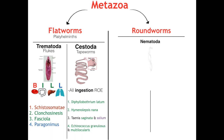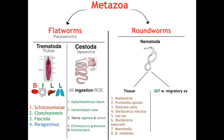And finally, for our roundworms, a.k.a. nematoda, I have them categorized into tissue and GI with migratory symptoms, according to the system where they are primarily symptomatic. Starting off with our tissue nematodes, we have hookworms with Ancylostoma and Necator. Next, Trichinella spiralis, Toxocara canis, Onchocerca volvulus, Loa loa, Wuchereria bancrofti, Mansonella, and Dracunculus medinensis. And finally, for our GI with migratory symptoms, I have them in order from most to least GI-like, with Enterobius vermicularis and Trichuris trichiura mainly being contained to the GIT, while Strongyloides and Ascaris lumbricoides have more migratory symptoms.